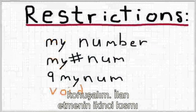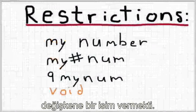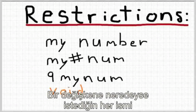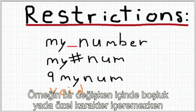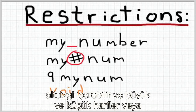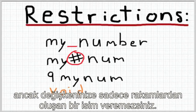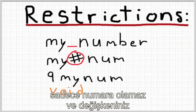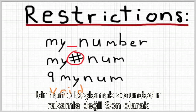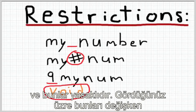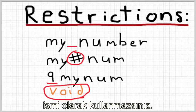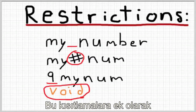Let's talk about naming variables. You can pretty much name a variable whatever you want, but there are certain restrictions. A variable name cannot have spaces or special characters in it, though an underscore is permitted. Upper and lowercase letters are fine, and numbers are okay too, but the name can't be just a number — your variable must start with a letter, not a number. Finally, variable names cannot be the name of an Arduino keyword, since those words are reserved for keyword use.